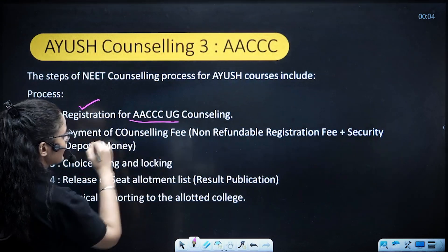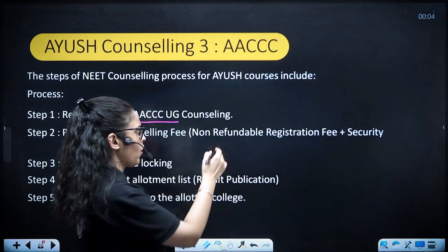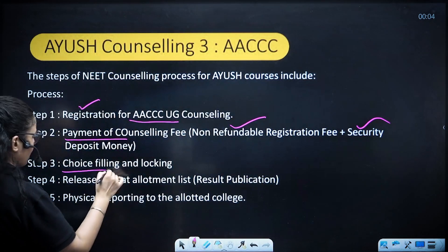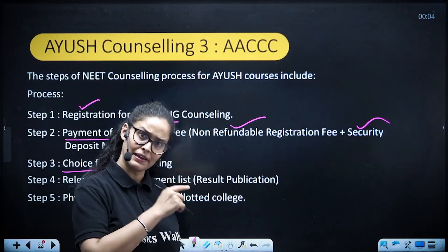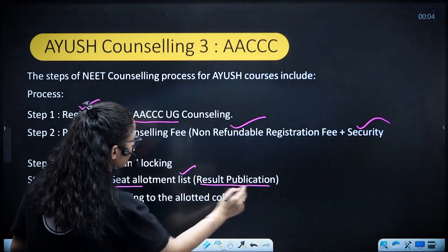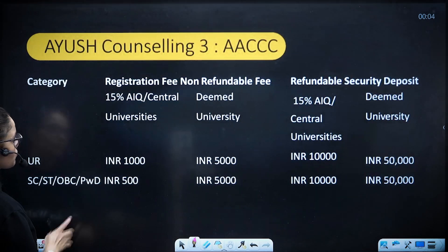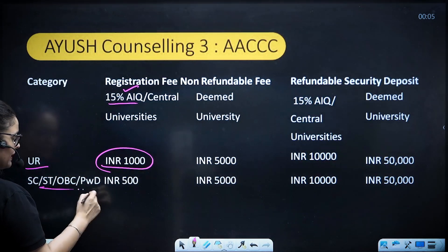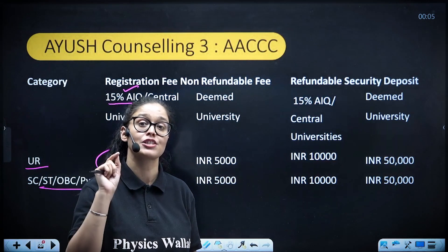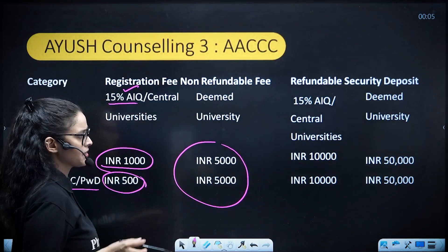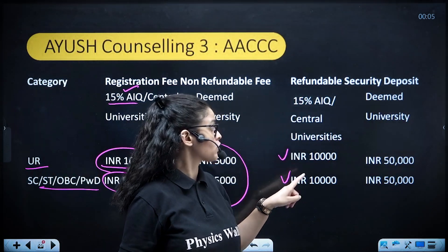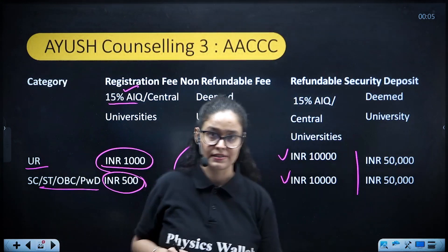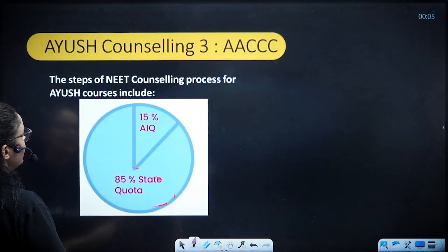Step one is registration for AACCC UG counseling. Next, you pay the fee — a non-refundable registration fee plus a security deposit, same as MCC for MBBS/BDS counseling. Then you do choice filling and locking. For the 15% All India Quota and central universities: ₹1,000 for General category, ₹500 for other categories — both non-refundable. For deemed universities: ₹5,000 registration fee for all categories, with a refundable security deposit of ₹10,000 for General and ₹50,000 for deemed university candidates.